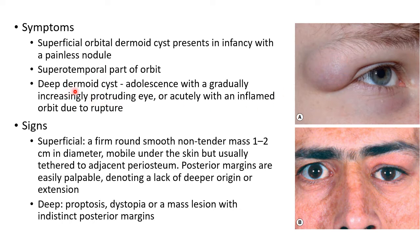Coming to deep dermoid cyst, it presents in adolescence with a gradually increasing proptosis, or it can present acutely with an inflamed orbit due to rupture.